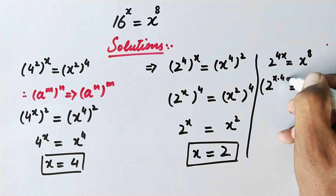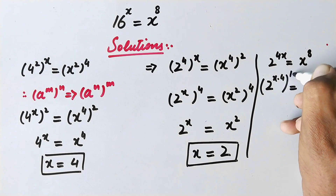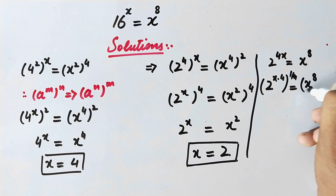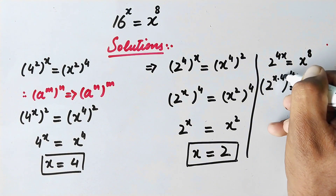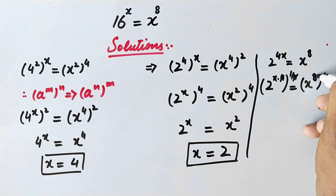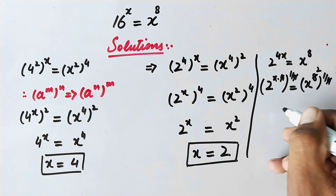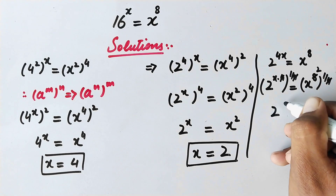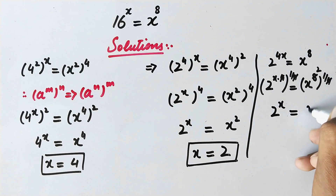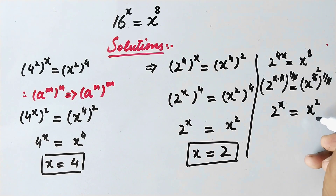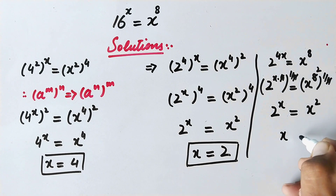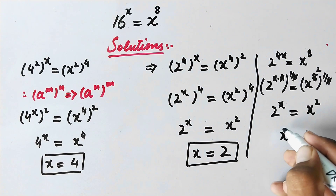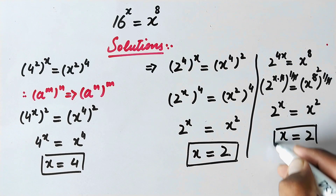Now we will take the power of 1 over 4 on both sides of the equation. So this 4 will cancel out the 4, and 8 divided by 4 equals 2. So here we get 2 raised to power x is equal to x raised to power 2. And again by comparing, we can write x is equal to 2. That is the value of x.